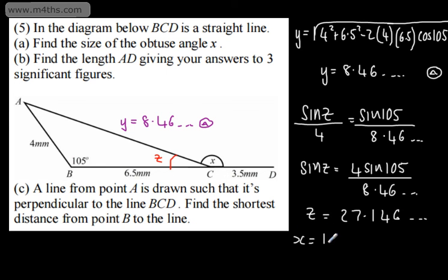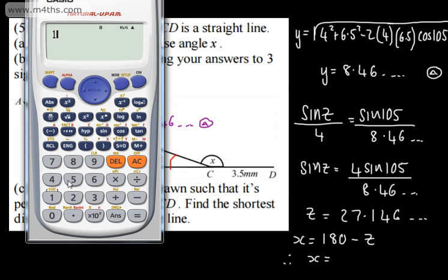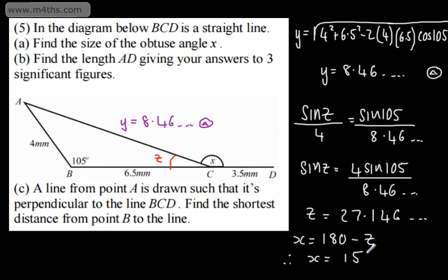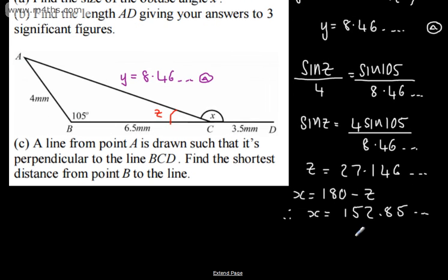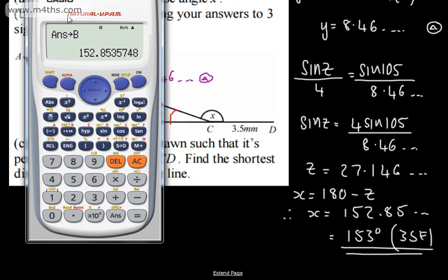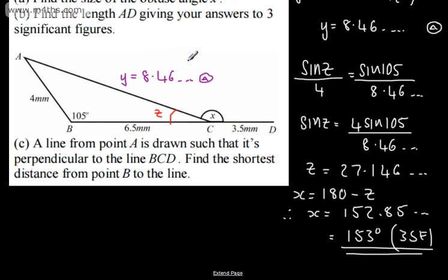We can say that X equals 180 minus Z. Therefore X will be equal to — giving this to three significant figures — 180 minus that answer, so that's 152.85... and X is going to be equal to 153 degrees, given to three significant figures. So that part is now done. I'll store this in the calculator — shift store B — just in case I use this in the future. So X is the 152.85... and that is B.